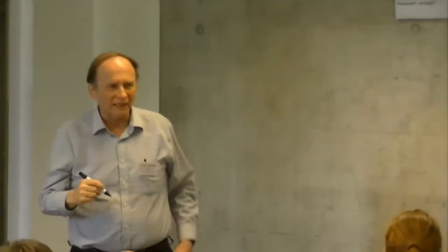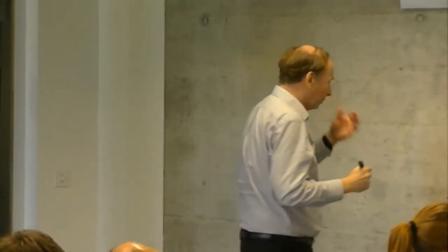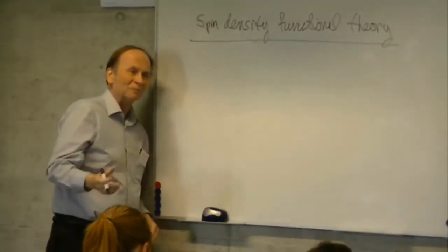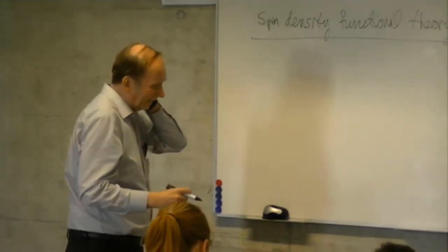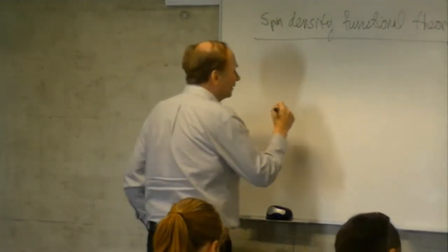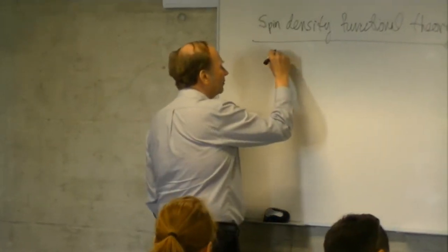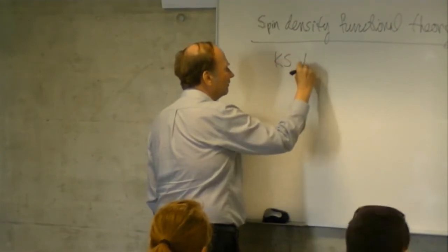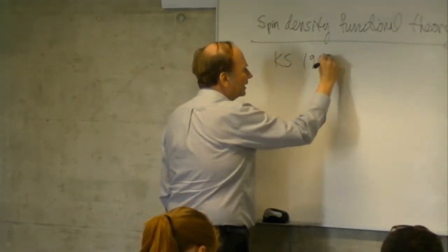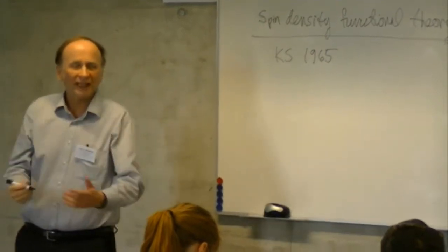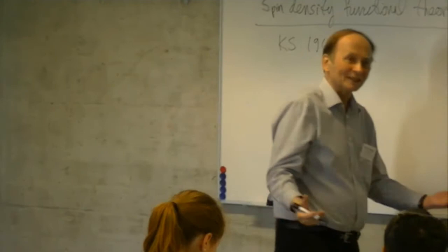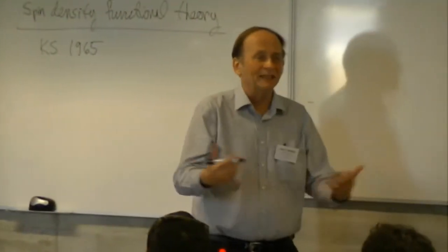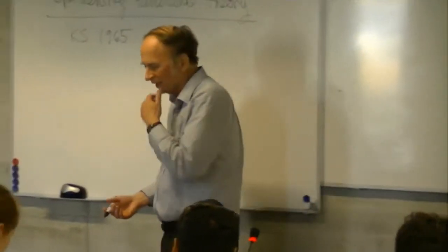In practice, whenever we develop approximations in density functional theory and whenever we use those approximations, we typically use spin density functional theory. The original ideas came from Kohn and Sham in 1965. They presented the idea but didn't really use it because they only had the correlation for a spin-unpolarized electron gas, so they didn't really have the inputs to do a local spin density calculation.